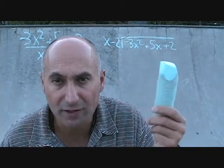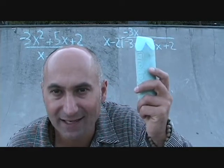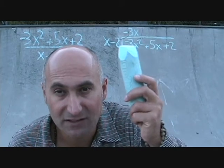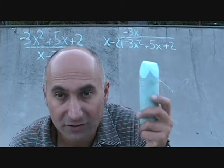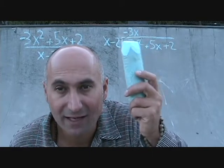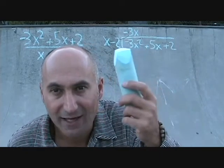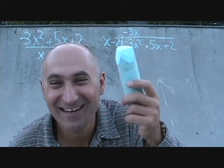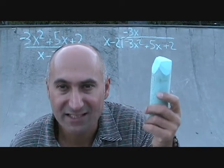So we put negative 3x up here and multiply it by both terms: negative 3x times x, and then negative 3x times negative 2. We definitely want to match the signs too — negative 3x times x gives negative 3x squared, which is exactly what we wanted. And negative 3x times negative 2 gives positive 6x.